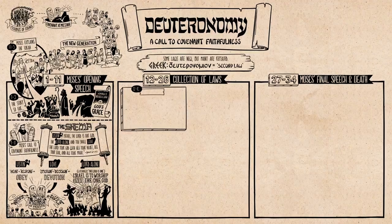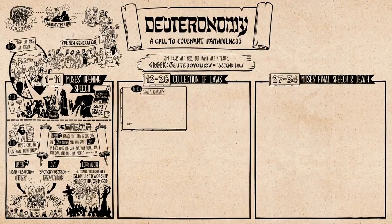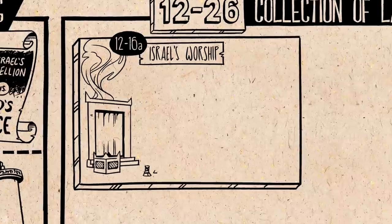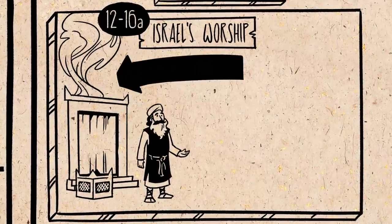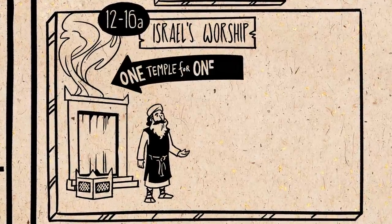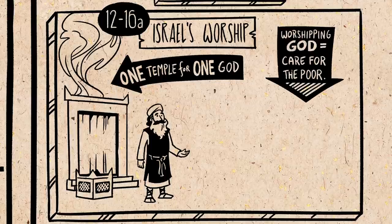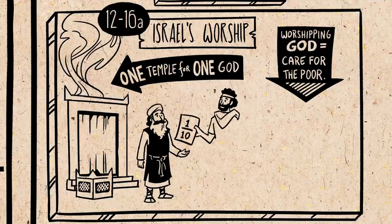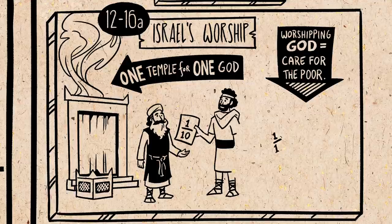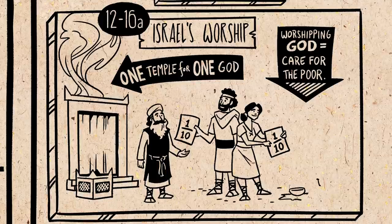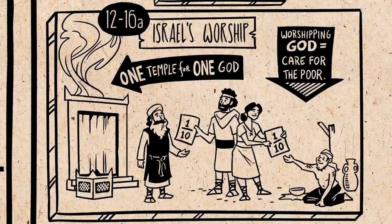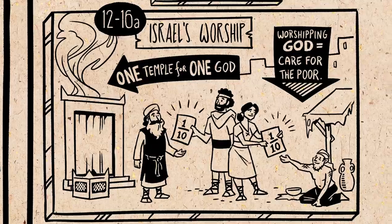And so we come to the large collection of laws at the center of the book, and they are roughly arranged by topic. The opening section is about Israel's worship of their God — they were to have one central temple where one God would be worshipped, and God was to be worshipped in Israel's care for its poor. All Israelites were to set aside one tenth of their annual income to be given to the temple, but another tenth was to be set aside every three years and given to the poor. These are the kinds of laws that put Israel on the cutting edge of justice in comparison to their ancient neighbors, and it was all bound up with their worship of God.